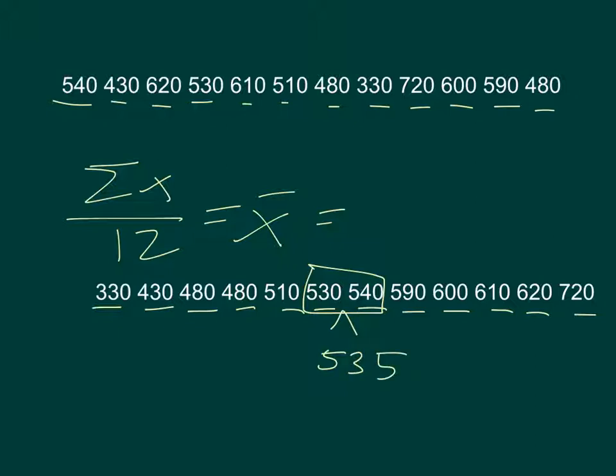Some other things that we're going to calculate here is what's called the range. Range is equal to maximum minus minimum. So that would be 720 minus 330, which is 390. So the range of values is 390.